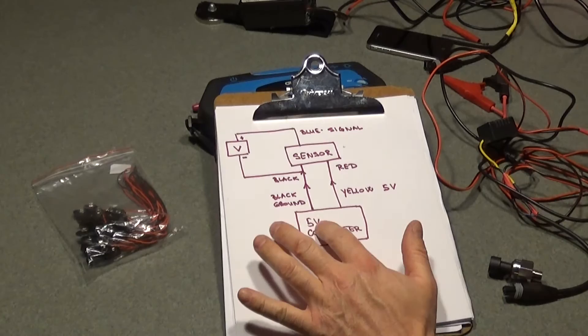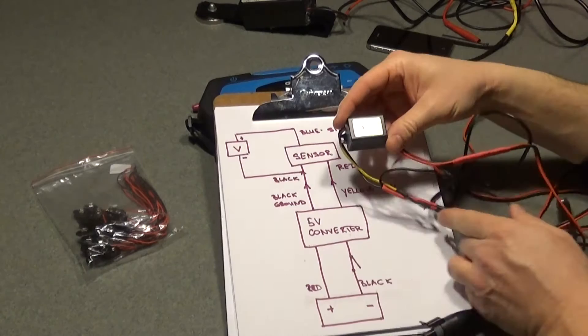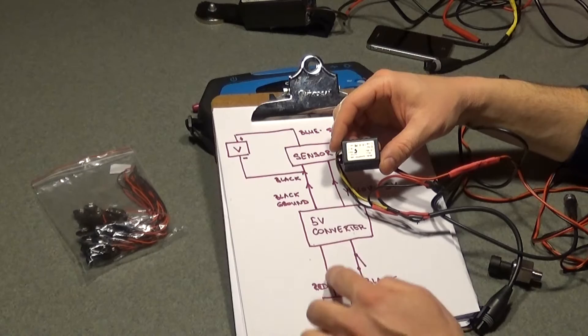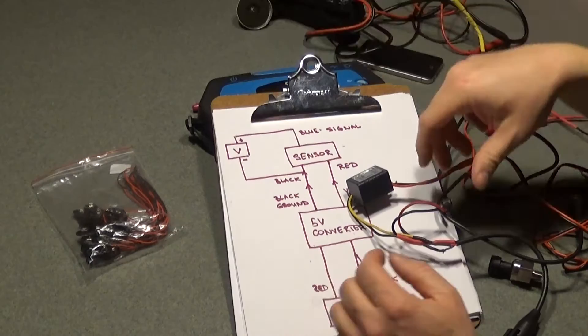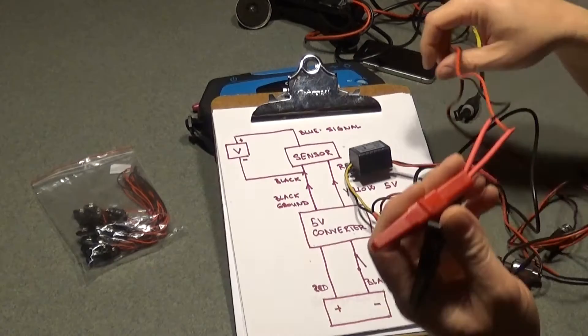So to hook up your unit, you're going to have a 5 volt converter. This unit has four wires. It has the red and black that's going to be connected to your power. So red goes to positive, black goes to negative. In between you should have some kind of switch, like I have on this unit. On this unit I do not have a switch because I just connected straight to my car battery so I don't need a switch.